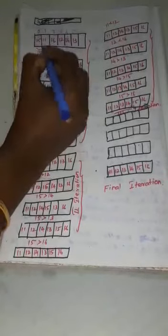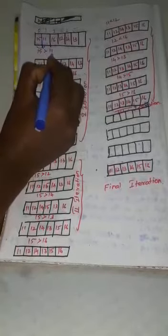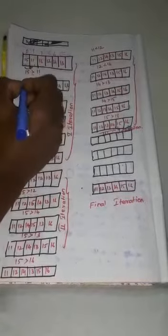The comparison starts with the first element and the next element. Compare 15 and 11. 15 is greater than 11, so if the current element is greater than the next element of the array, swap them. The current element is 15, the next element is 11 — since 15 is greater, the values are swapped. 11 goes to index 0 and 15 goes to index 1.